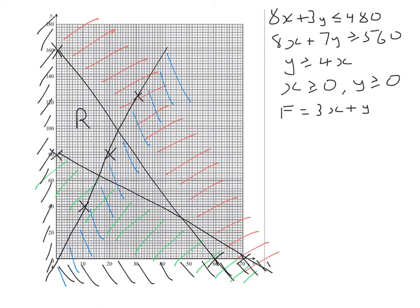Now there's an objective function which is F equals 3x plus y. And we need to find the minimum value of F and the maximum value of F. Now these minimum and maximum values are going to occur at any one of these four points. The vertices of the feasible region. So we need to determine what those points are. So let's label them A, B, C, and D.